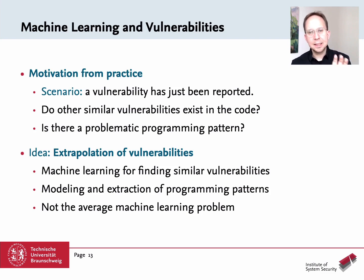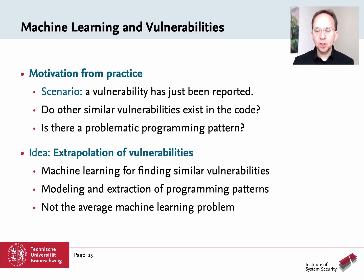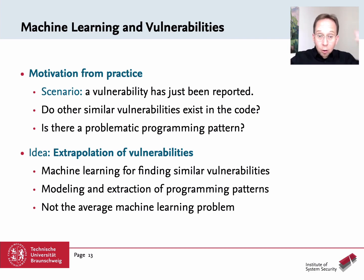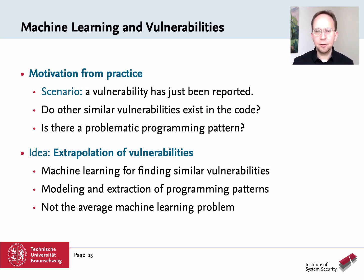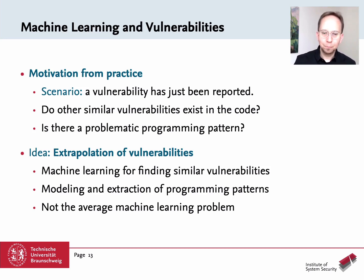We had this vulnerability as our starting point, and we said: if this is the mindset of the developer, maybe he or she has made the same problem at other places. Maybe this is some kind of problematic programming pattern — something wrong in the developer's thinking but not so explicit that we can directly write it down. Wouldn't it make sense to look for similar problems given this single vulnerability? This is why we call this an extrapolation: I have one bug somewhere and I want to check a software project for similar bugs. It's already clear this is not the typical machine learning problem — we have one training instance, not one million.